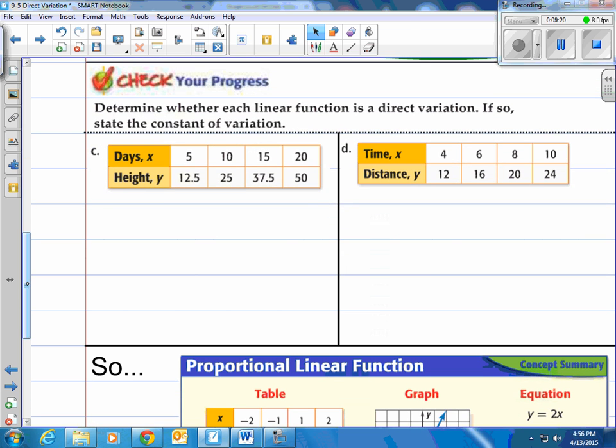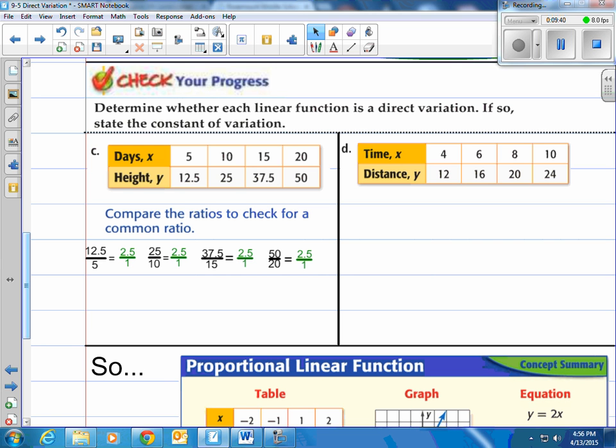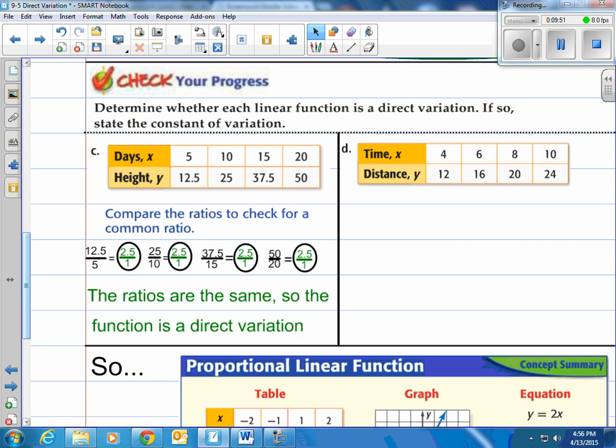Alright, how about you pause the video. Come on back and see how you do. Determine whether each linear function is a direct variation. If so, state the constant of variation. Well of course the first thing we want to do is compare the ratios to check for a common ratio. So in here in C we're talking about days versus height. Or height versus how many days. So let's take our 12.5 divided by 5, 25 divided by 10, 37.5 divided by 15, and 50 divided by 20. Notice they all equal 2.5 over 1 if you reduce them. So the ratios are the same. So the function is a direct variation.